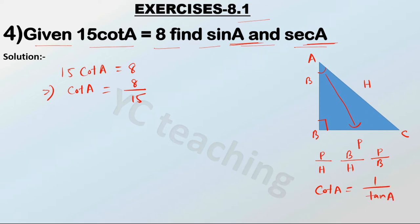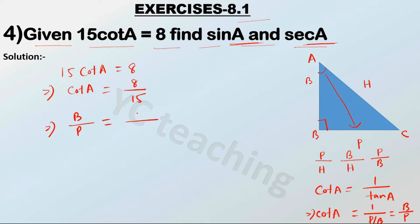The reciprocal of tan A is cot A. Since tan A is perpendicular by base, cot A is base by perpendicular. So cot A equals base by perpendicular, which equals 8 by 15.